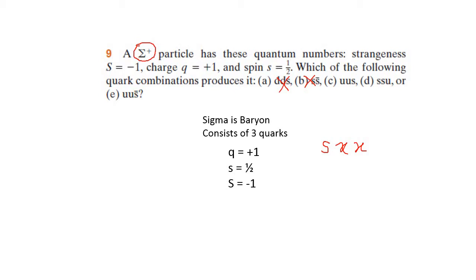Let's look at option E: up, up, and anti-strange quark. This is impossible because the strangeness is negative 1, meaning we need a strange quark, not an anti-strange quark. So option E is impossible.